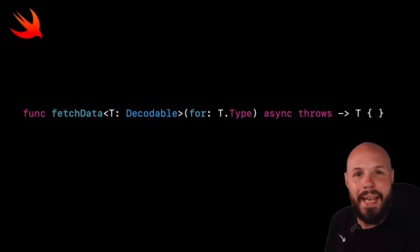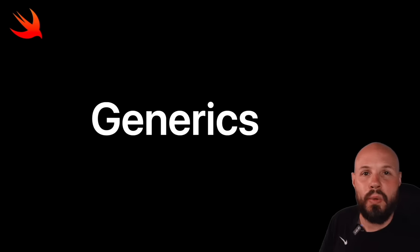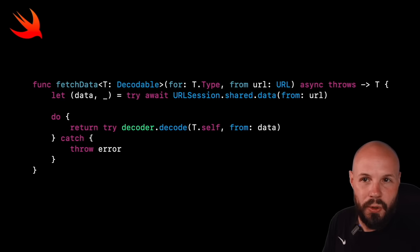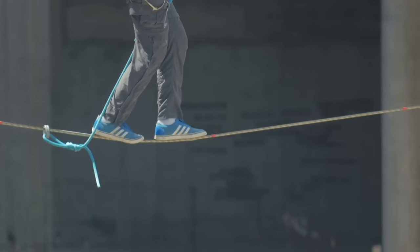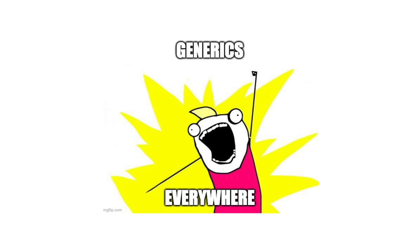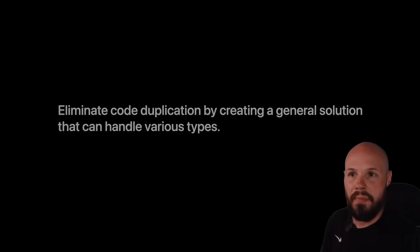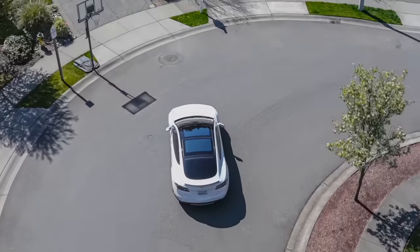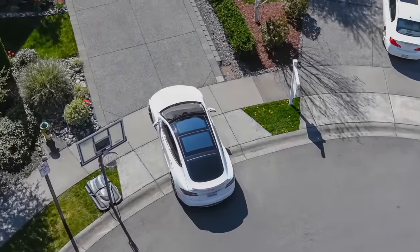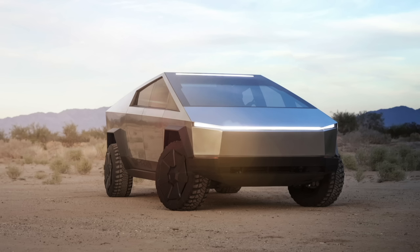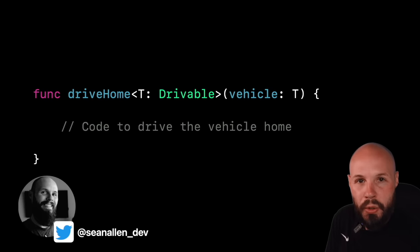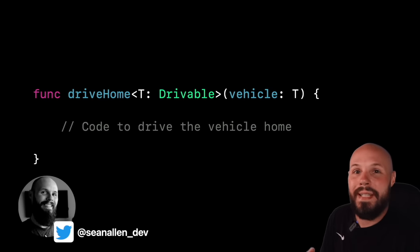Generics can be intimidating — angle brackets, single-letter types, protocol conformance. This video teaches you what generics are with a basic and real-life example. Then we'll talk about the balancing act, because once you learn them you'll want to use them everywhere, and you can easily add unnecessary complexity to your code. Generics eliminate code duplication by creating a general solution that can handle various types.